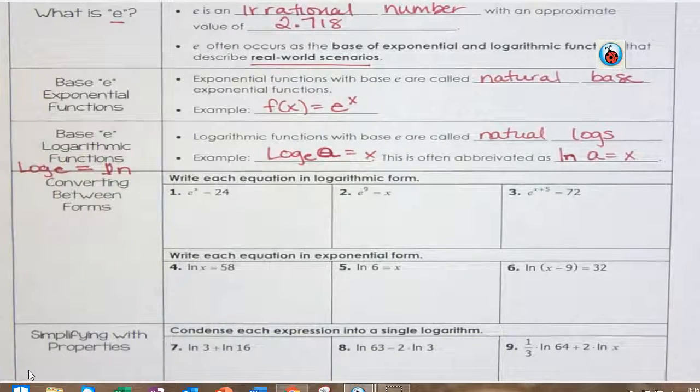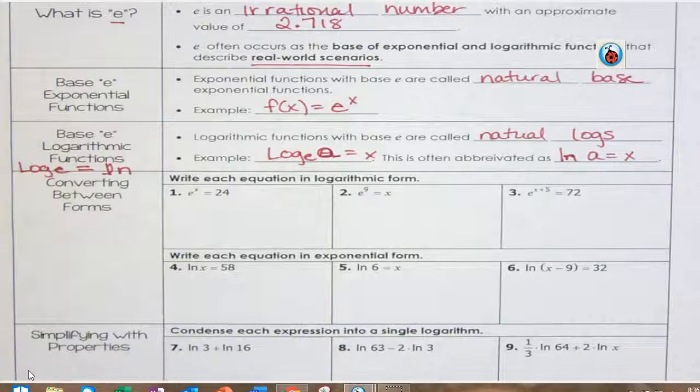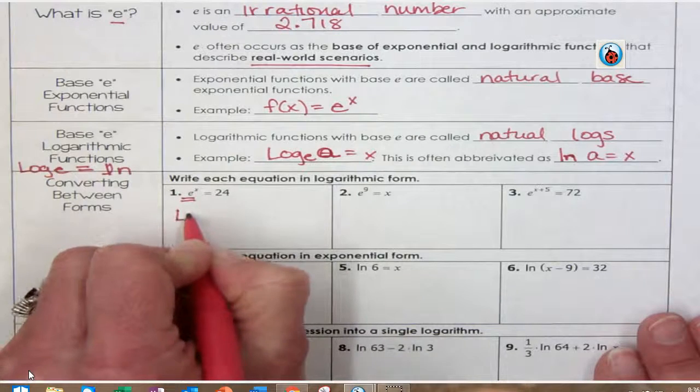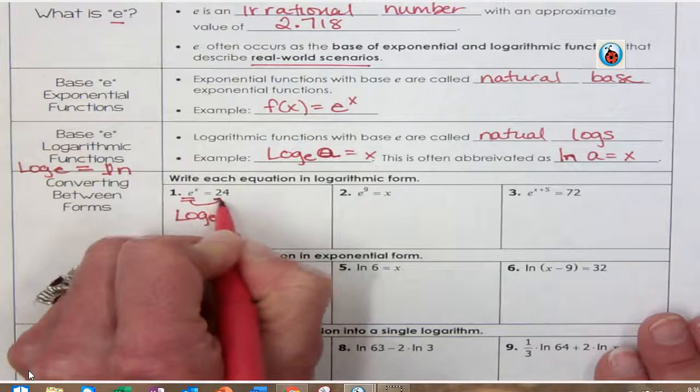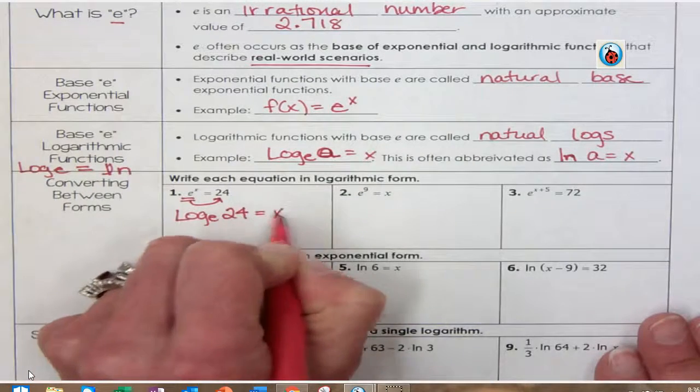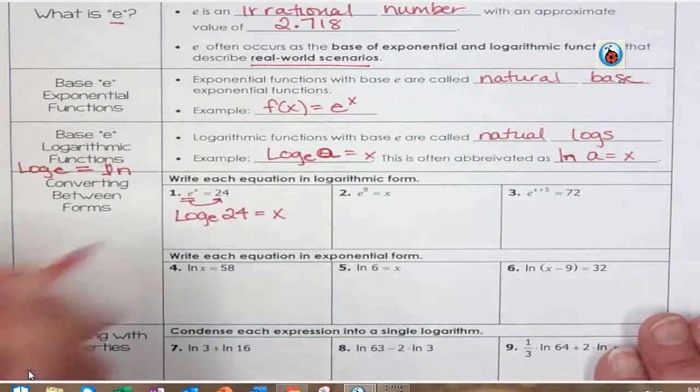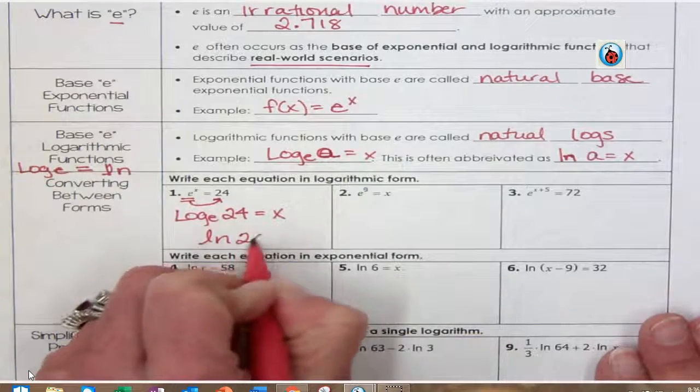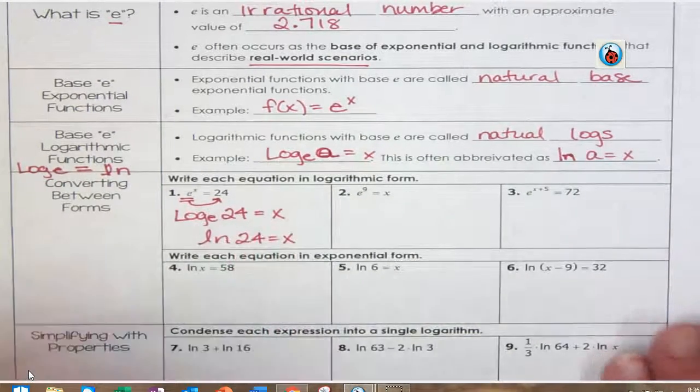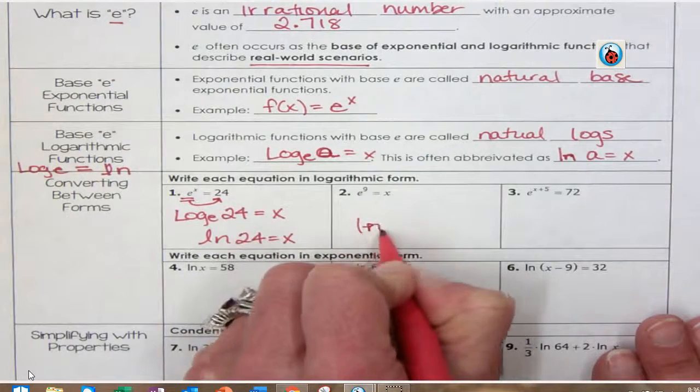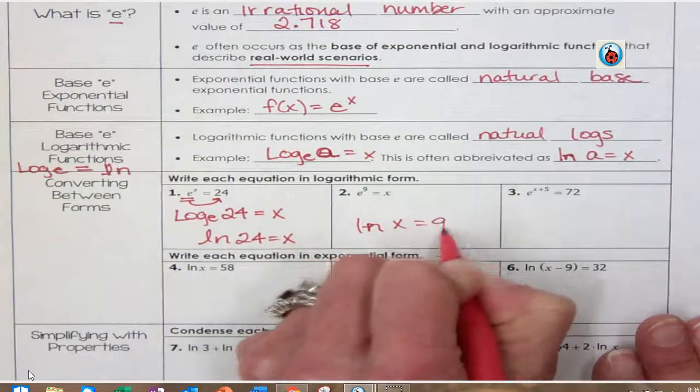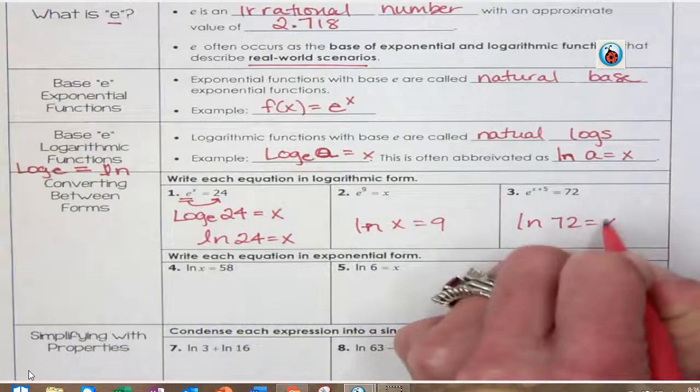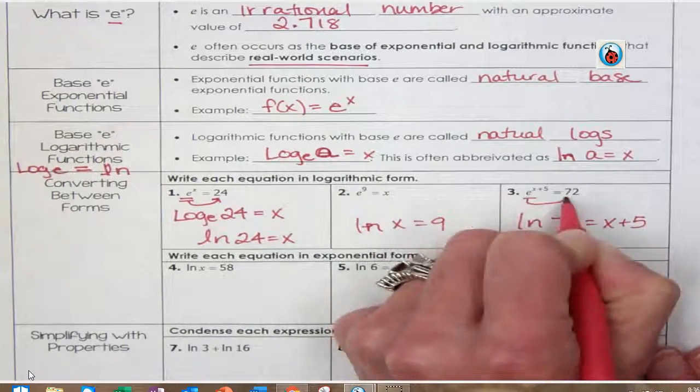I'm not going to go through all of these just because in the interest of time, but if you've got log base E of 24 equals X, it's the same thing except instead of writing log base E, we're going to write ln 24 equal to X. So this would be ln X is 9, ln 72 is X plus 5.